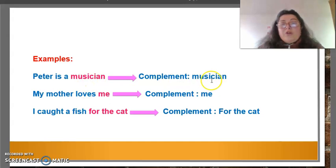The next: my mother loves me. In this case, the word me is a complement. I caught a fish for the cat. In this case, the complement is for the cat.